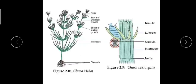Coming on to sexual reproduction — sexual reproduction in case of Chara is oogamous. The mature sex organs are large and visible. Male sex organs are called anthridium or globules. The female organ is called nucule or oogonium. Most species are homothallic while some are heterothallic. The position of the nucule is always above — globule is below and nucule is above.